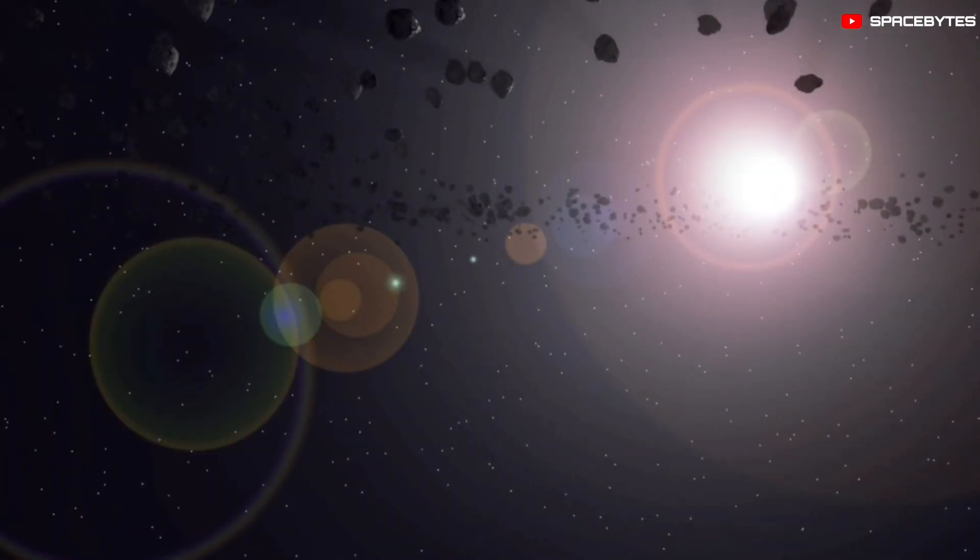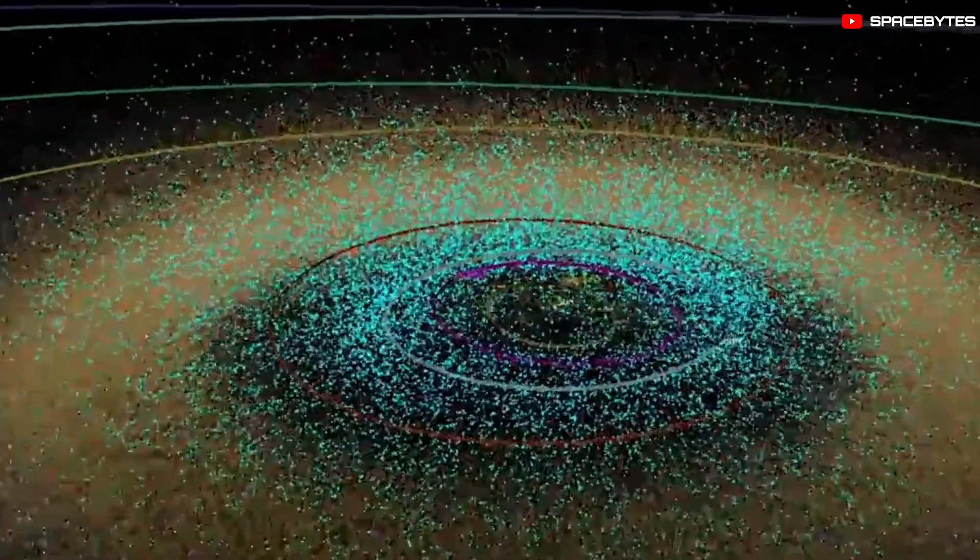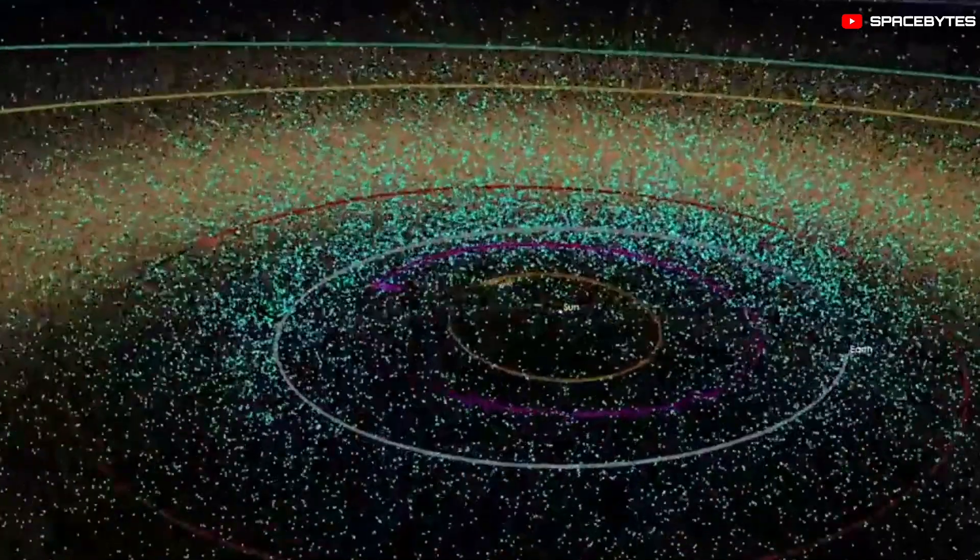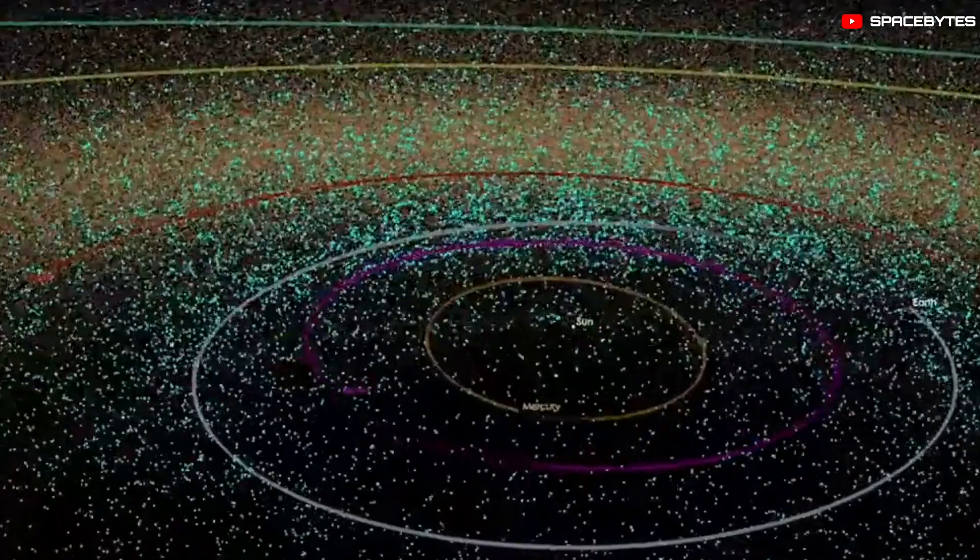Comets are relatively rare compared to asteroids or meteors. The current number of known comets is 3,743 according to NASA, while there are tens of thousands of known near-Earth asteroids.